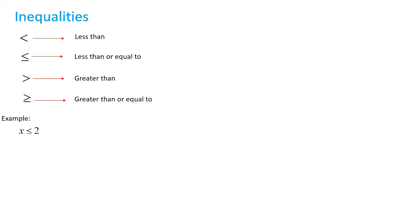Consider the example x ≤ 2. This is a linear inequality. Just as we learned about linear equations — the highest power is 1, and when drawn on a graph sheet, we get a straight line — the same conditions are satisfied here. It is in one variable. Inequality means any one of the four symbols is included. If it contained an equal to symbol instead, it would be an equation. Another example: 2x + 3y > 12 is also a linear inequality with two variables, since it contains the greater than symbol.